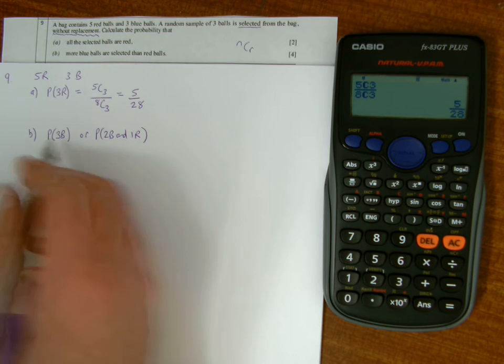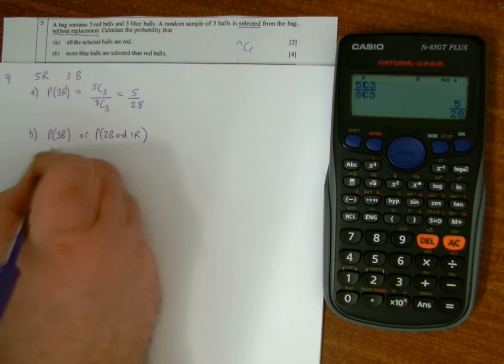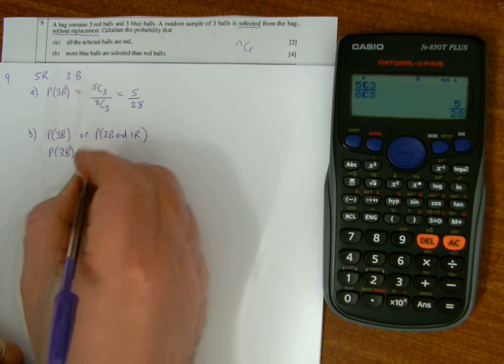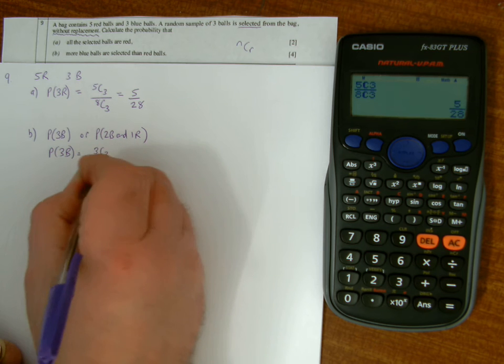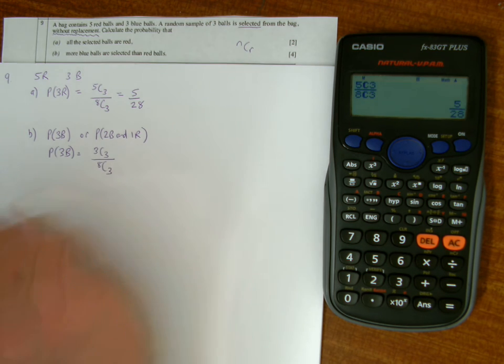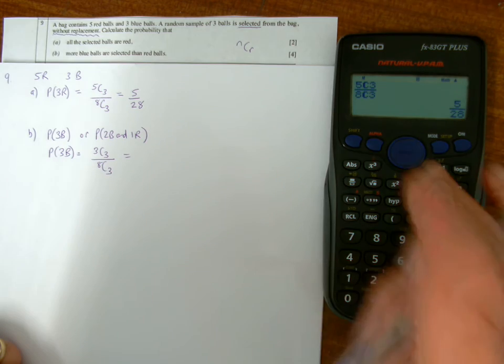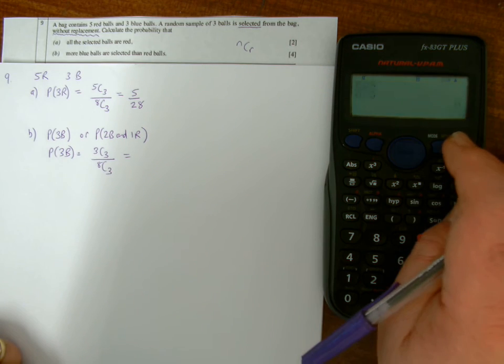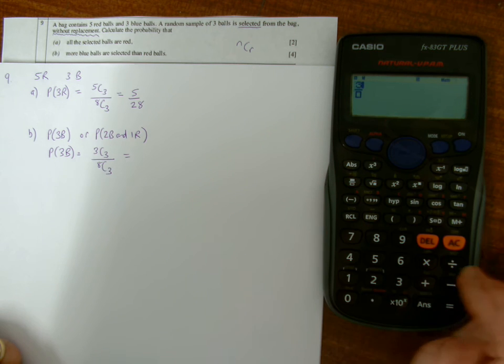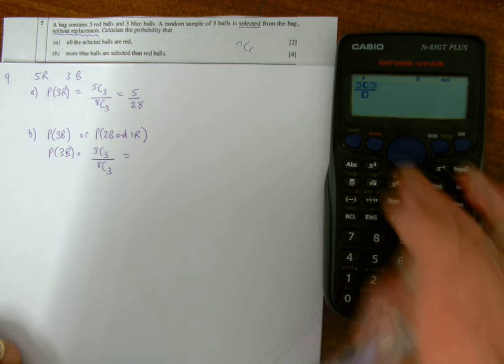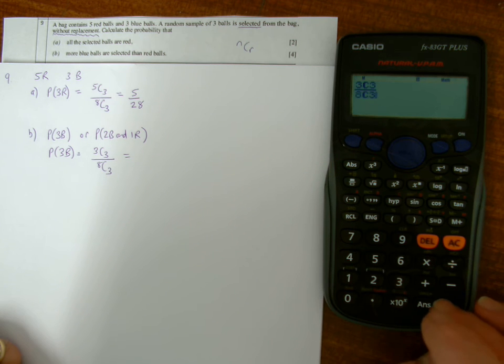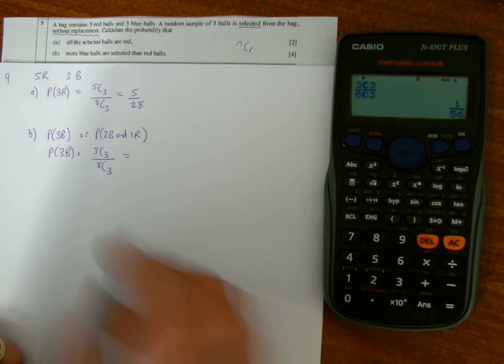So working out the first part, probability of three blue first of all. Choosing three from three, so it's three choose three out of eight altogether, eight choose three. That's one over 56.